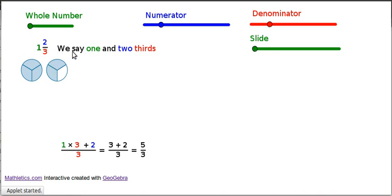Here we have 1 and 2 thirds. I like to say these fractions out loud, 1 and 2 thirds. You've got one whole number and 2 thirds of another number.